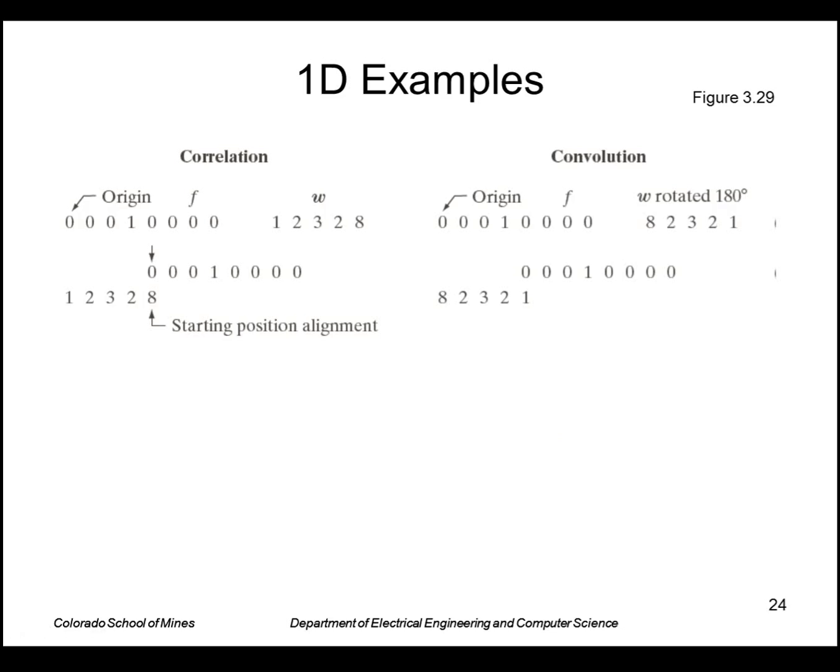Let's look at how correlation and convolution work on one-dimensional examples. Here we'll use a very simple image which is just an impulse, all zeros except for a one.